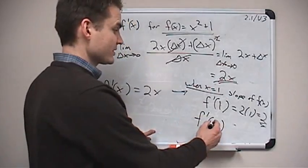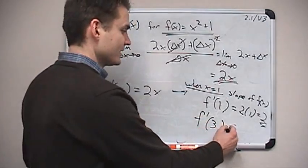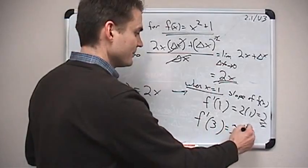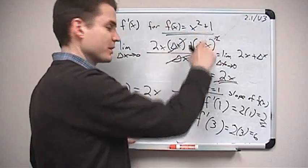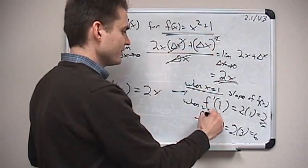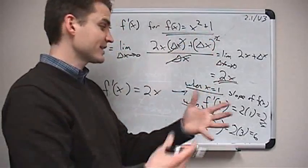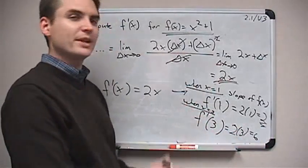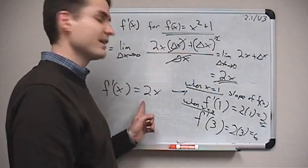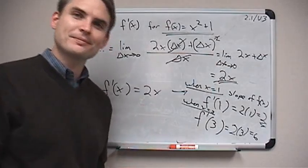For instance, what's the slope when x is 3? Well, it's 2 times 3, which is 6. So if you went back to the function x squared plus 1, and you wanted to find the slope a little bit later on when x is 3, you know now it's going to be 6. So we can use this formula for any number of x coordinates now that we've found it.